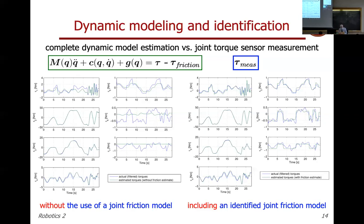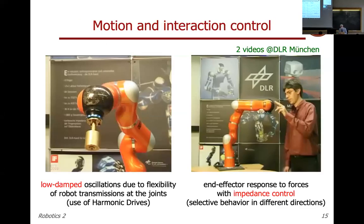Moving to motion and interaction control: these short videos are from DLR, with whom we have had a long collaboration. I spent my only sabbatical there in 2005 at the German Aerospace Center near Munich. On the left, the KUKA lightweight robot is carrying a heavy payload. The whole robot weighs only 14 kilograms yet is able to carry 14 kilograms of payload — equal to its own weight.